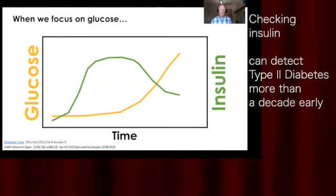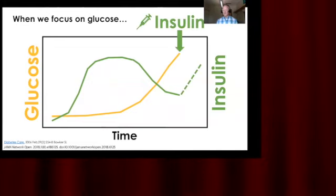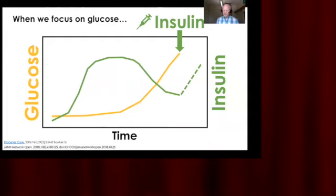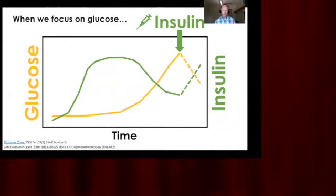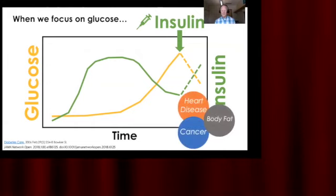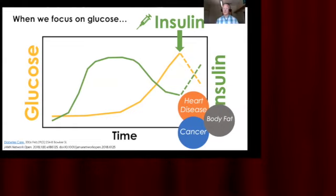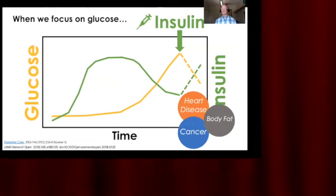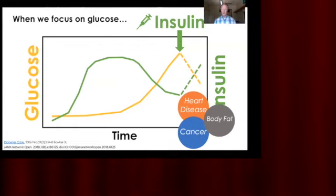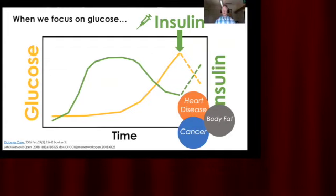Unfortunately, when we focus on glucose and begin treating the patient with insulin therapy, that will most certainly push up the insulin. Conventional medicine would say, who cares about the insulin — we care about the glucose, and because the glucose is going down, we're doing what we want. The tragedy in this paradigm: we have a significant increase in body fat — a diabetic who begins insulin therapy can expect to gain up to 10-plus kilos of fat easily. The risk of heart disease will climb by multiples. The risk of cancer mortality will go up — one particular study found by about 90% with insulin therapy.